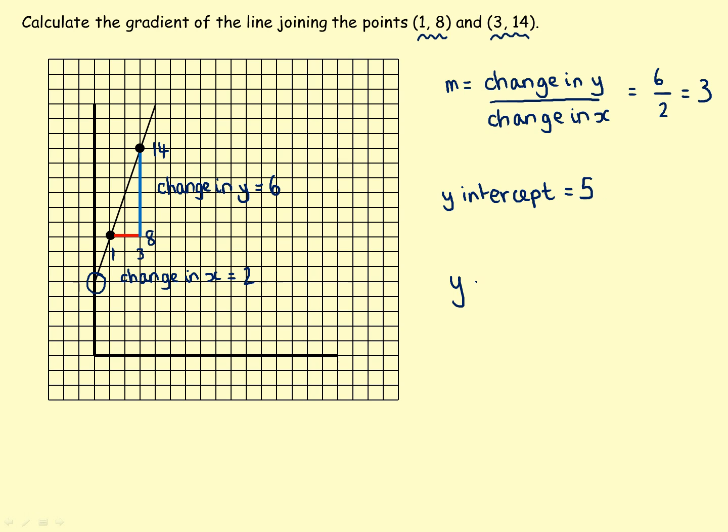Once we've done that, it's just a simple matter of combining those two together. Remember that the gradient is the number that goes in front of x, so we put a 3 in front of the x, and it goes to the y-axis at plus 5, so the equation is y equals 3x plus 5.